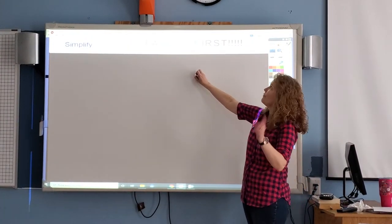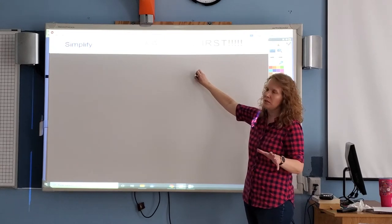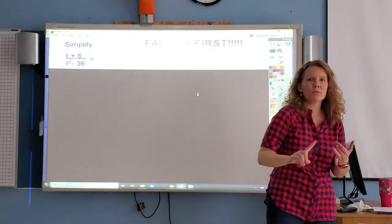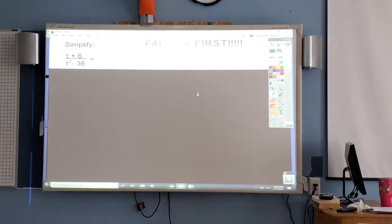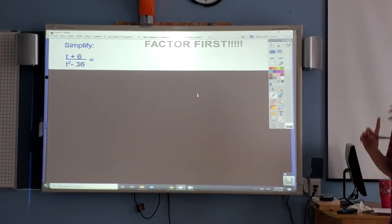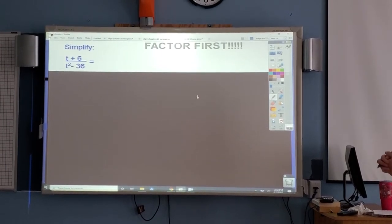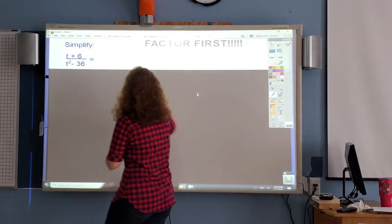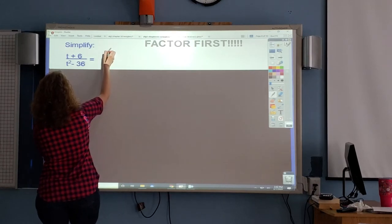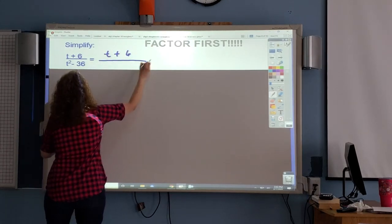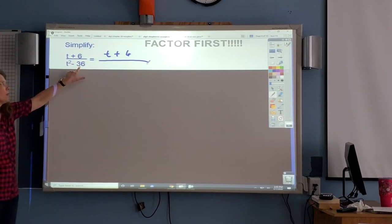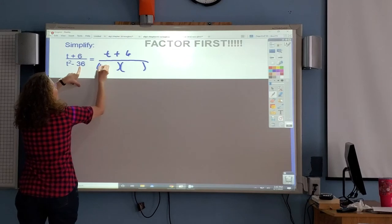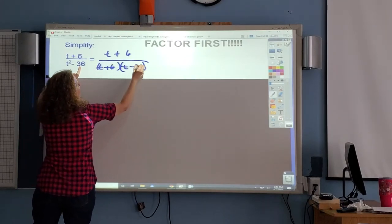Write this really big: Factor first. Before you do a whole bunch of these problems today, you have to factor before you can cancel anything out. When you're working with binomials and trinomials, you always want to factor those. So look at this fraction. The numerator, there's nothing to factor out of t plus 6. But the denominator is a difference of two squares, and you will want to factor it out. So factor it first. I'll leave the t plus 6 on top. This is the difference of two squares. It's the two binomials, t plus 6 and t minus 6.